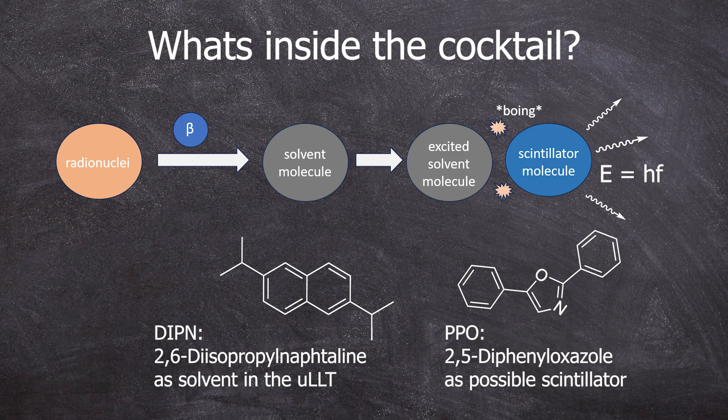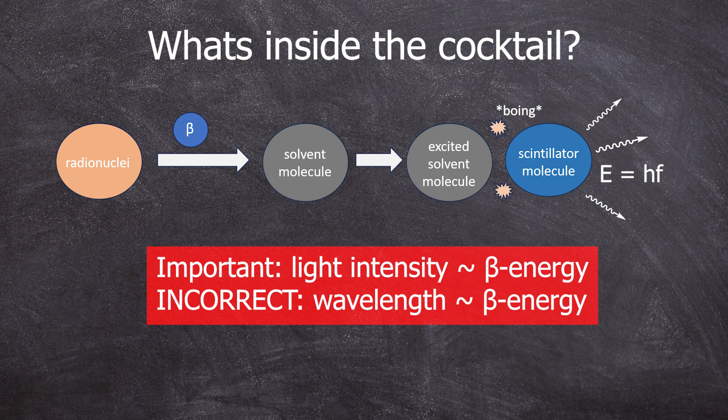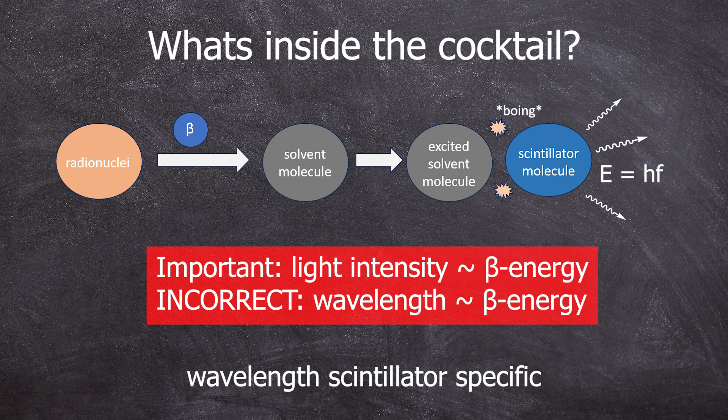The scintillator now releases excess energy in the form of light. A photomultiplier tube amplifies the signal, which is then processed by the software. It's important that the number of photons is proportional to the energy of the beta particle, not the wavelength. The wavelength of the photons depends on the scintillator. In this case, it's in the UV range. I'll come back to that shortly.